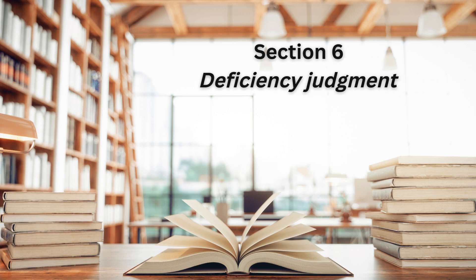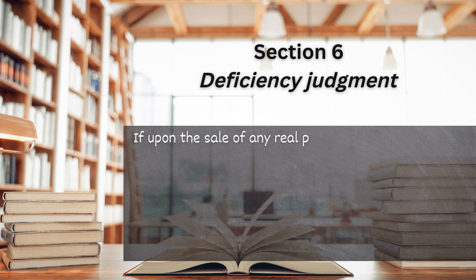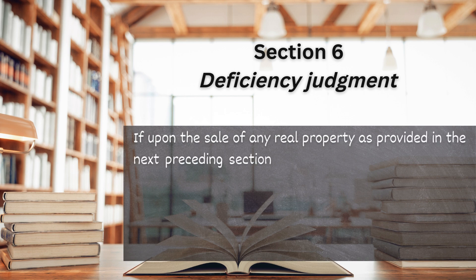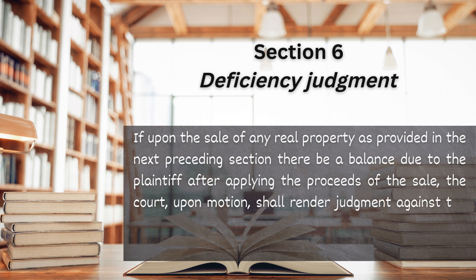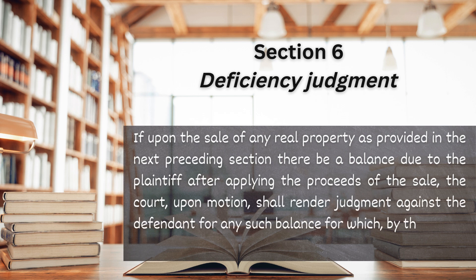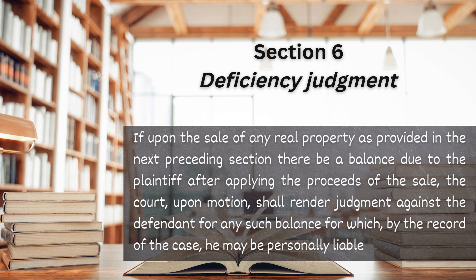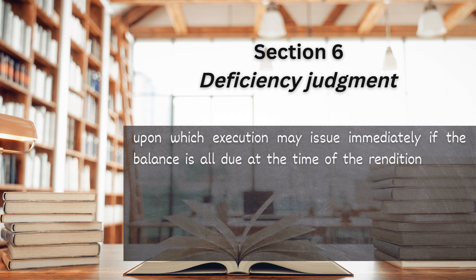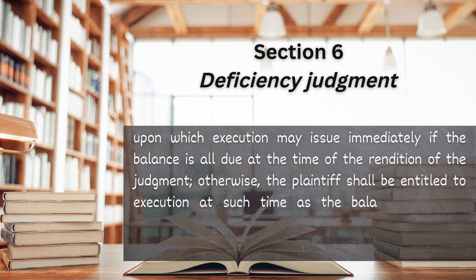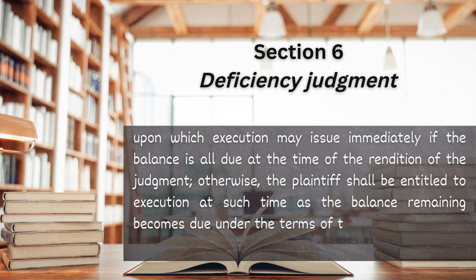Section 6. Deficiency Judgment. If upon the sale of any real property as provided in the next preceding section, there be a balance due to the plaintiff after applying the proceeds of the sale, the court, upon motion, shall render judgment against the defendant for any such balance, for which, by the record of the case, he may be personally liable to the plaintiff, upon which execution may issue immediately, if the balance is all due at the time of the rendition of the judgment. Otherwise, the plaintiff shall be entitled to execution at such time as the balance remaining becomes due under the terms of the original contract, which time shall be stated in the judgment.